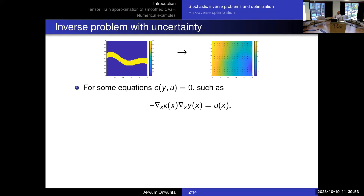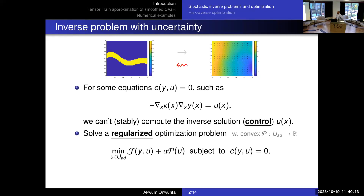However, minimizing the expected value of the cost can be very misleading because extreme realizations of the solution can be very rare but very important. An alternative is to use coherent risk measures. One is mean plus semi-deviation; another is conditional value at risk. We're going to focus on conditional value at risk, which originated in finance for quantitative risk modeling. It takes into account those values that can be very extreme — for instance in portfolio modeling, losses that can be very catastrophic but have very small probabilities.